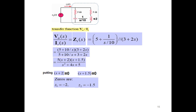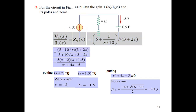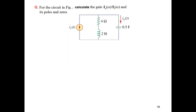For poles, we put the denominator equal to zero. Since this is a quadratic equation, we use the quadratic formula to find the roots. This gives two roots: p1 and p2 equal to −2 ± j. So those are the two poles of the function.